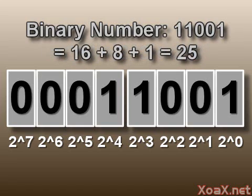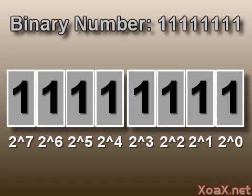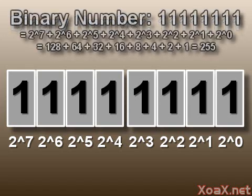Likewise, this byte which consists of all ones represents the largest binary number we can store in a byte. This is the largest number that we can represent in a byte and is equal to the sum of the powers of 2 from 7 to 0. The total comes to 255.